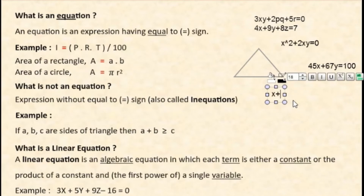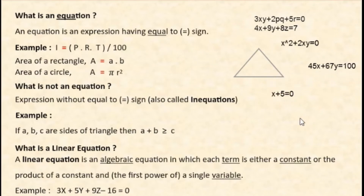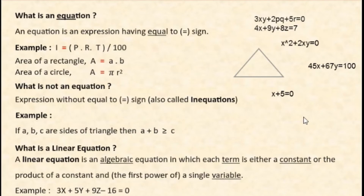Consider a simple problem: if x plus 5 equal to 0, what should be added to 5 to get 0? The answer is minus 5, so x equal to minus 5. This is a linear equation in a single variable. The rule is: if your equation has a single variable, you need only one equation to find the solution.